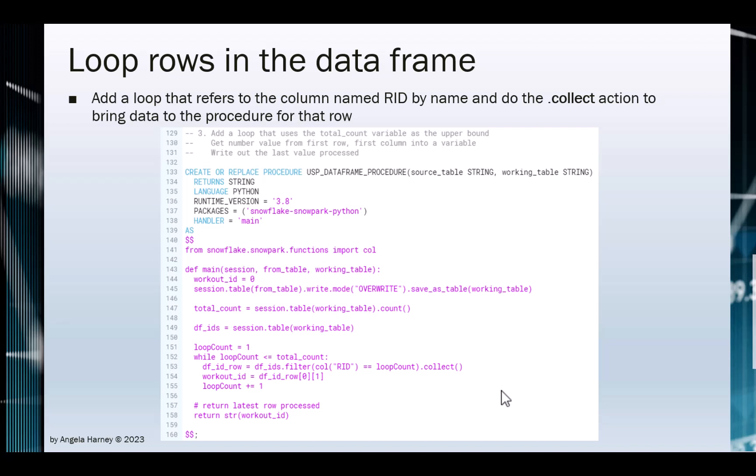This overrides the workout_id variable each time. These two lines of code demonstrate two different ways of referring to specific columns in a data frame. Row 155 increments our loop until all rows are accessed.